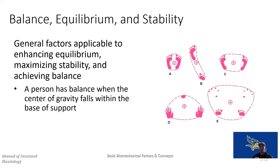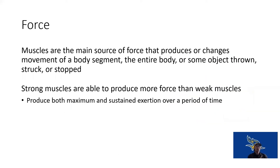We can improve stability by expanding the base of support, adding more contact points, or lowering the center of gravity — for example, squatting down shortens the lever from center of gravity to the foot axis, making it harder to fall over. Muscles cause the forces that maintain balance, and can also create internal forces — contracting, pulling on tendons and bones — to cause torque that overcomes external resistance and produces motion.